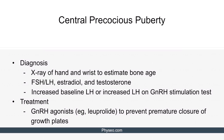The diagnosis of central precocious puberty begins with an x-ray of the hand and wrist to estimate the bone age of the patient. If the bone age is greater than the chronological age by more than one year, we then measure hormone levels such as FSH, LH, estradiol, and testosterone. An increased baseline LH indicates central precocious puberty right away because LH is normally produced by the anterior pituitary. If LH is normal or low, we perform a GnRH stim test, which differentiates central from peripheral precocious puberty.